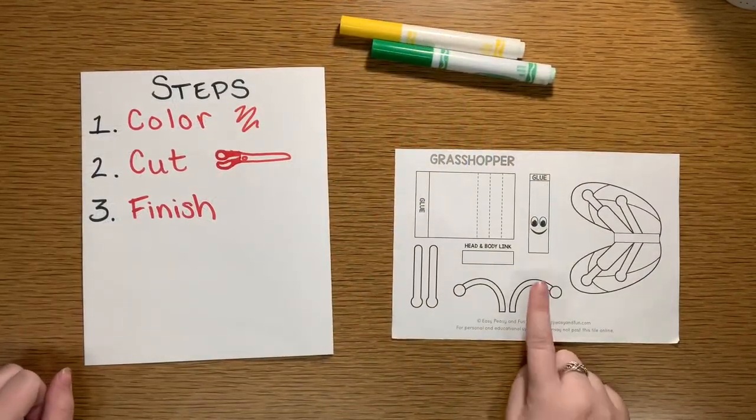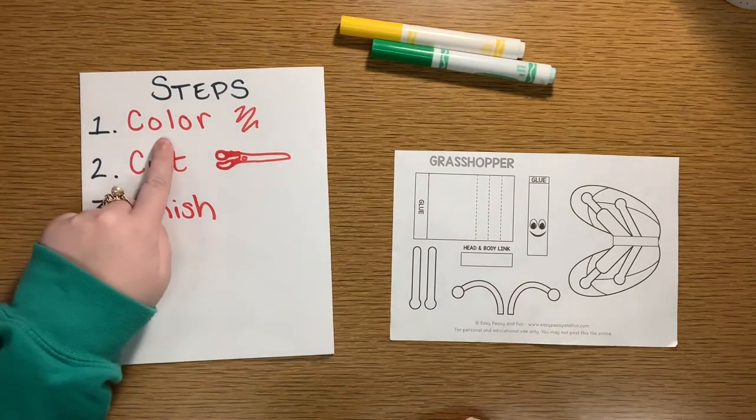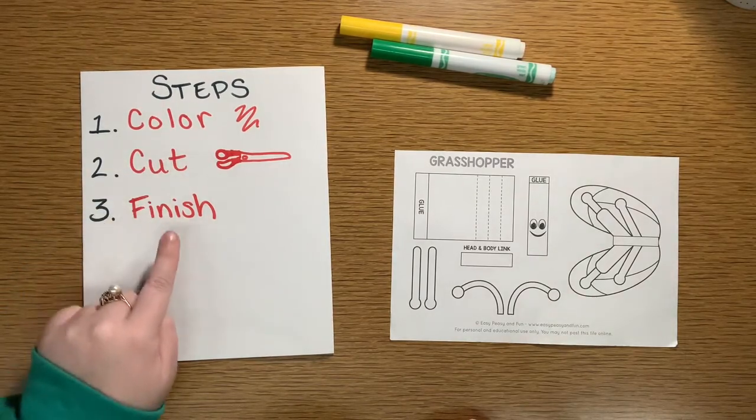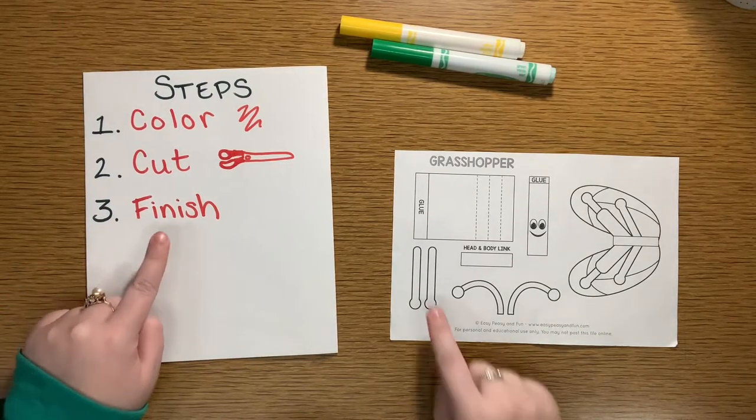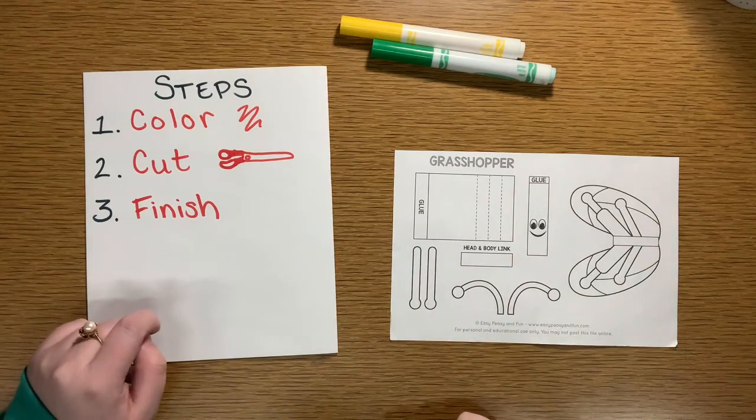Here are the steps we use to make one of these finger puppets. First we're going to color, then cut, and then we're going to do an awful lot of finishing to put all of these pieces together.